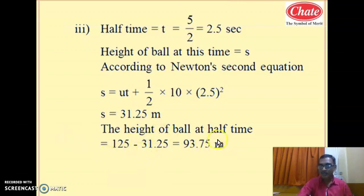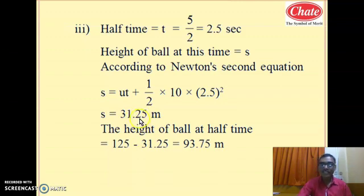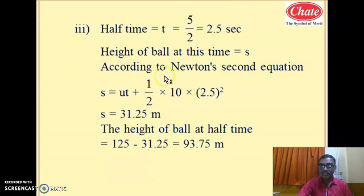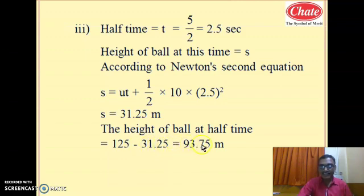Have you understood this? The height of the ball is always measured from the ground. The distance 31.25 meters is travelled from the top, so the position from the ground is the total height 125 minus the distance travelled 31.25, giving the height of the ball as 93.75 meters.